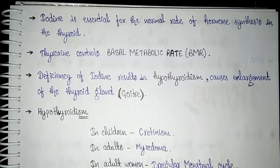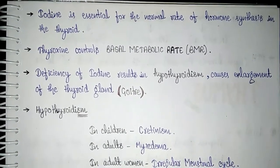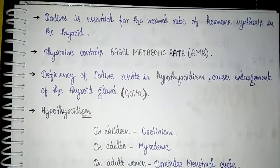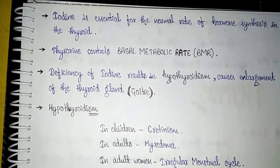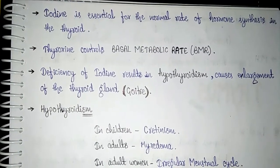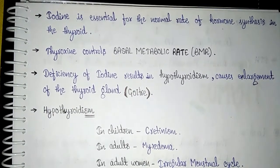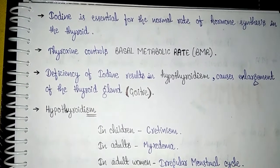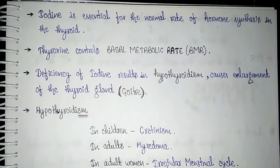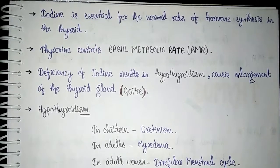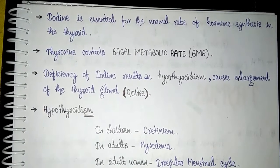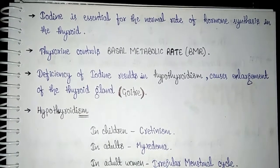Now, what is the function of thyroxine? Thyroxine controls the basal metabolic rate (BMR). Metabolism is the sum total of all activities our body performs, either external or internal — such as respiration, walking, running, and digestion. Additionally, thyroxine also regulates the metabolism of carbohydrates, proteins, and fats.